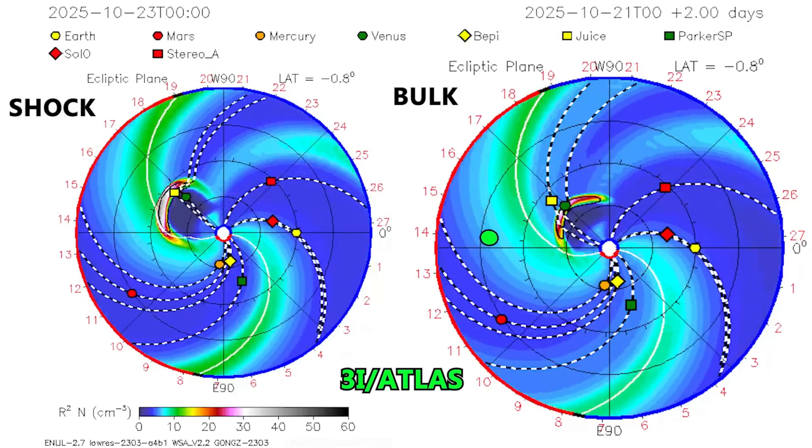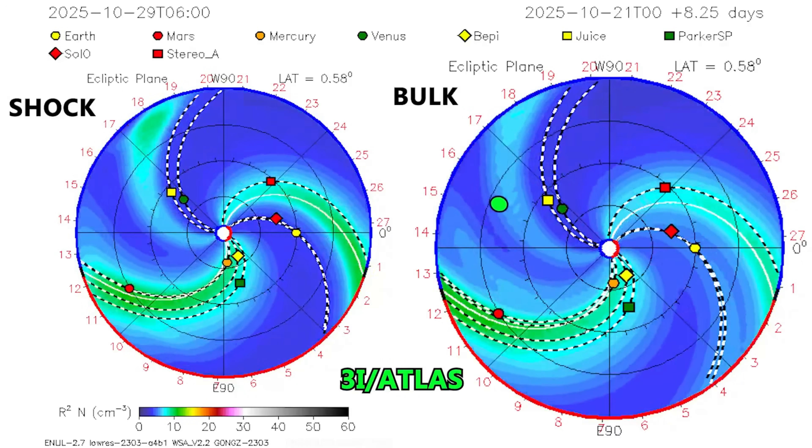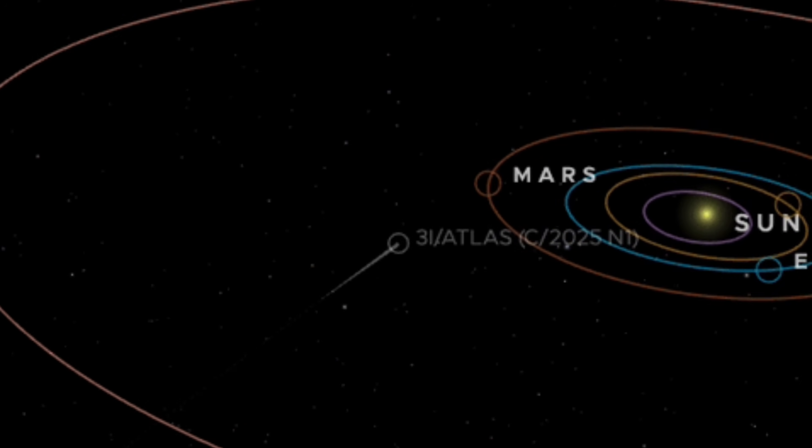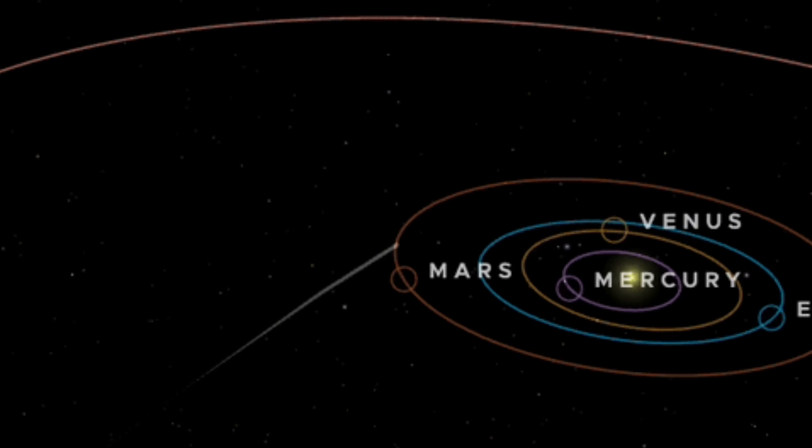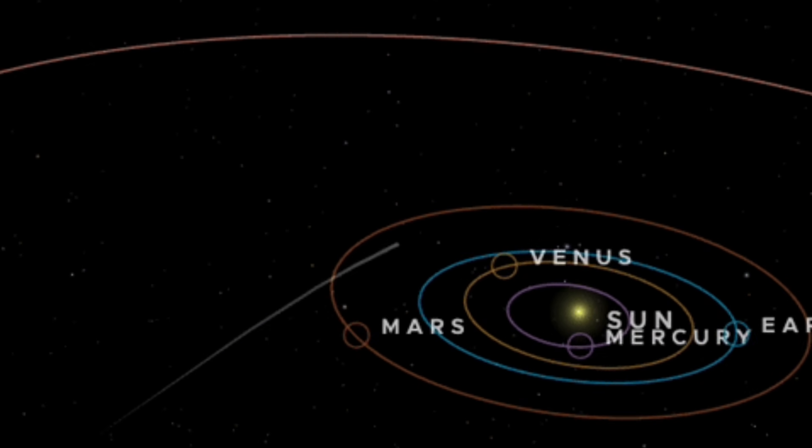The extreme methanol-to-HCN ratios, which barely resemble those of known solar system comets, suggest processes that may not be purely thermal or eruptive in nature.